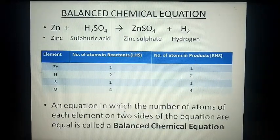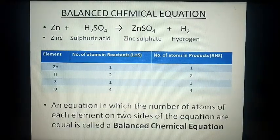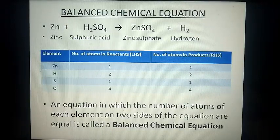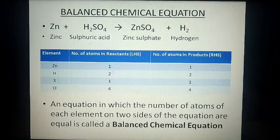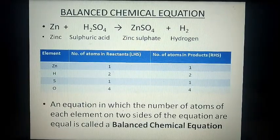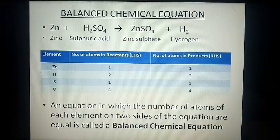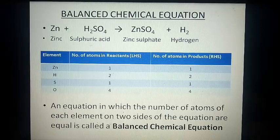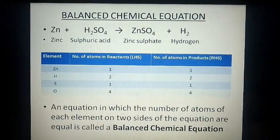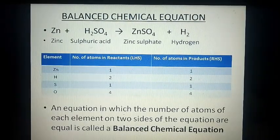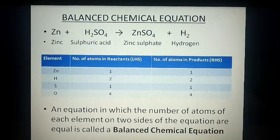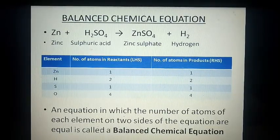In this example we noticed that all four elements present in this equation - zinc, hydrogen, sulfur, oxygen - on both sides of this equation, meaning left hand side and right hand side, or you can say reactant side and product side, on both sides, are equal. This you can observe better in this table. For example, zinc is present as one atom on both sides of the equation. Similarly hydrogen is present as two atoms on both sides of the equation. Similarly sulfur is present as one atom on both sides of the equation. And oxygen is present as four atoms on both sides of the equation. So this kind of equation, in which the number of atoms of each element on both sides of the equation are equal, is called a balanced chemical equation. Or we can define a balanced chemical equation as an equation in which the number of atoms of each element on two sides of the equation are equal.